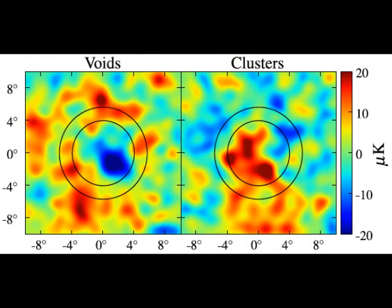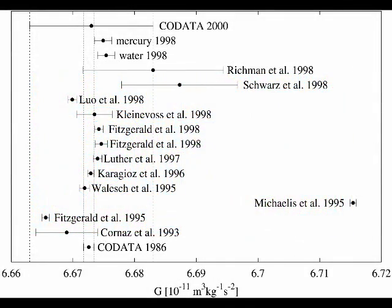Number sixteen, I'd like a plausible explanation for the apparent structure of large-scale voids in the cosmic background radiation. Why? Seventeen, I'd like an explanation for why the gravitational constant changes every time it has been measured. Why?